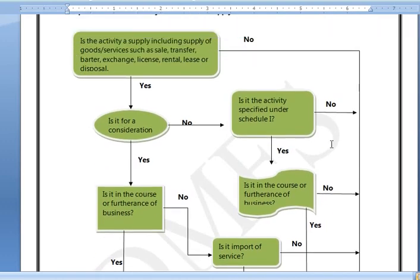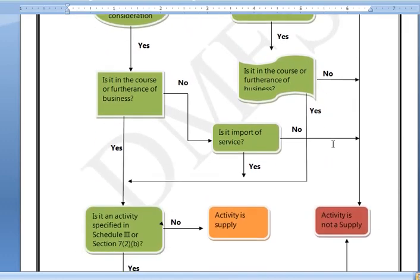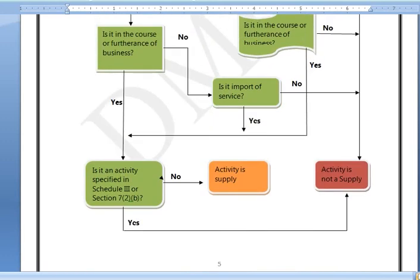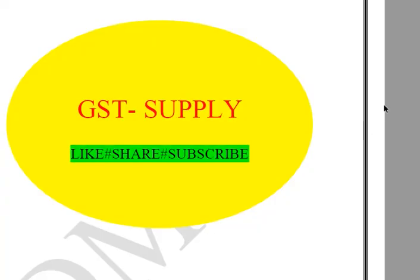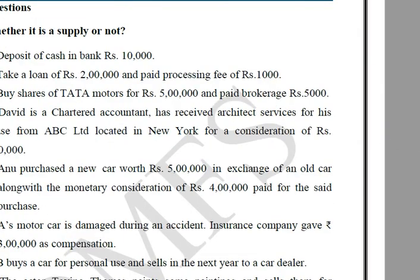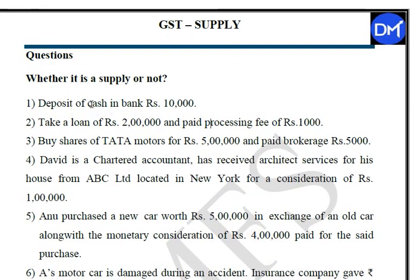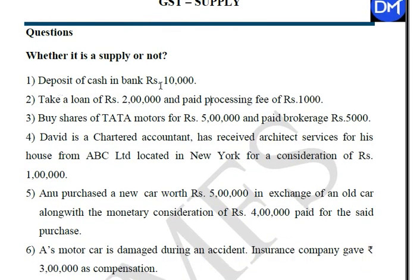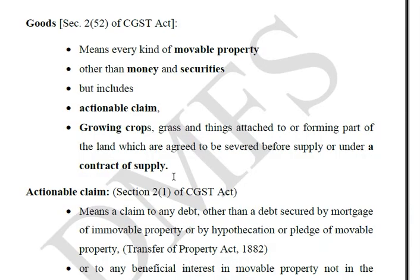Now let's do questions. First question: deposit of cash in bank Rs.10,000. Let's check if this is goods or services. Goods means every kind of movable property other than money and securities.